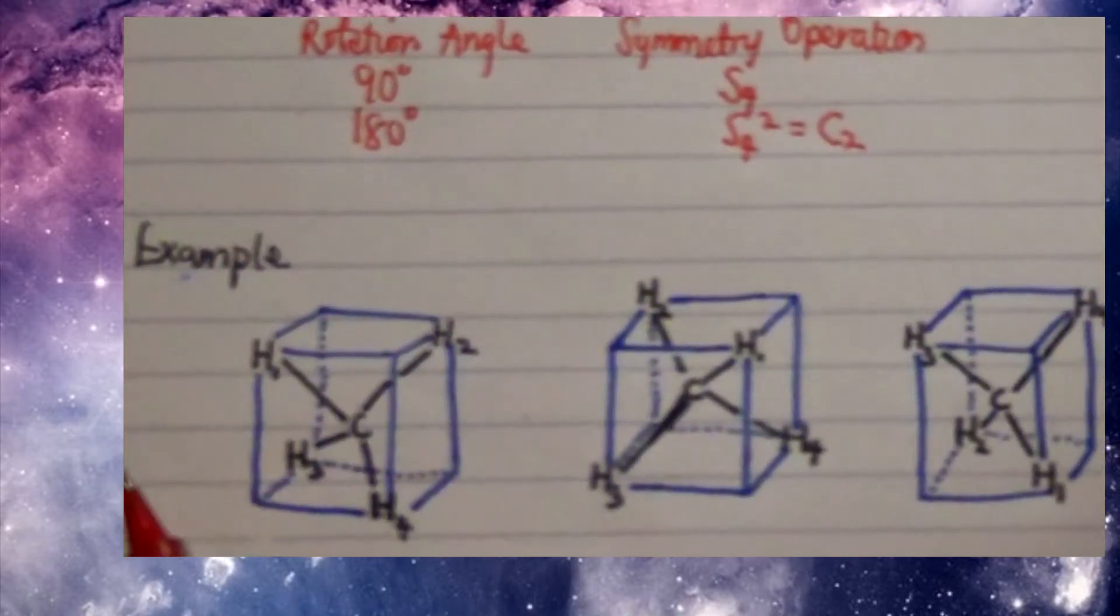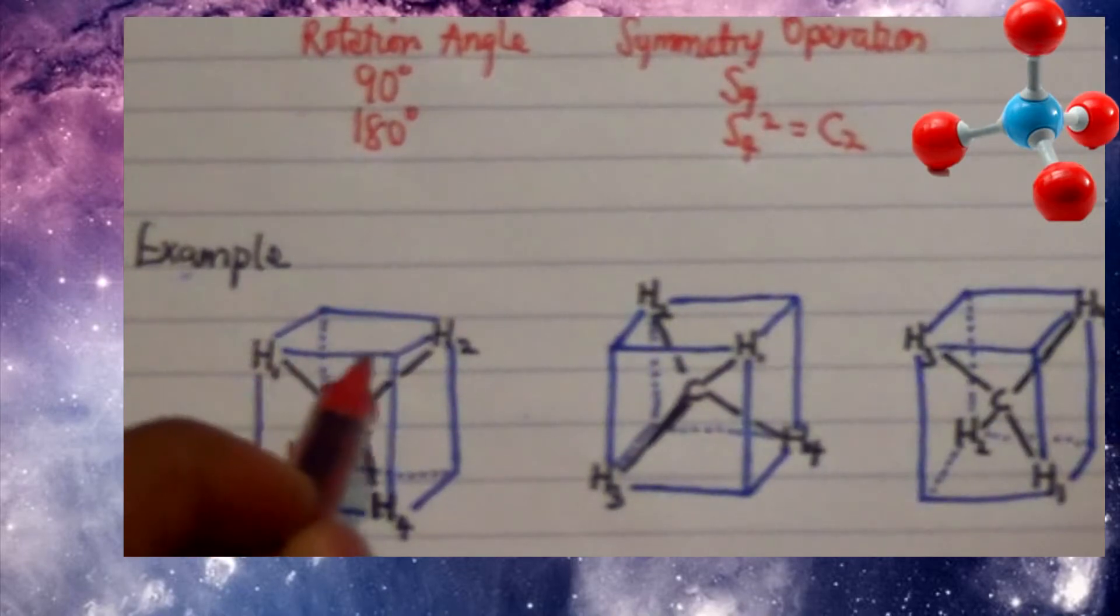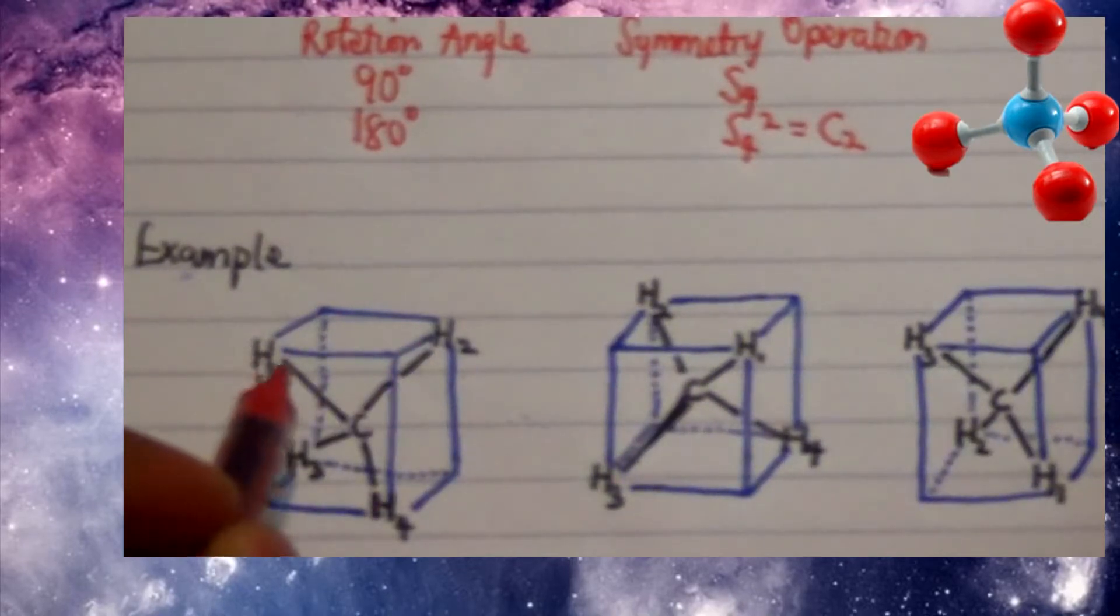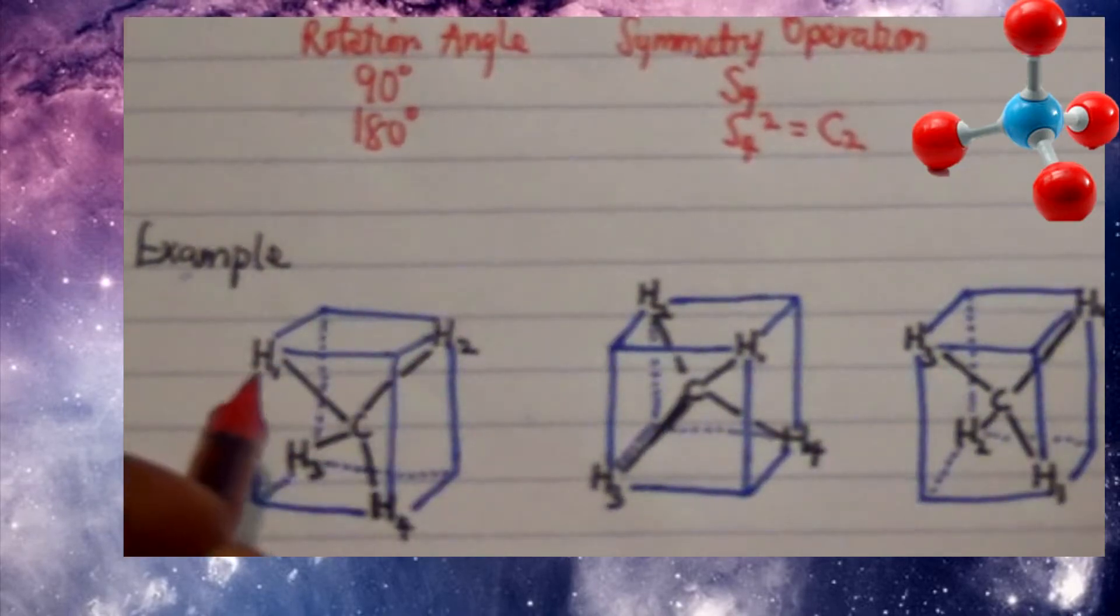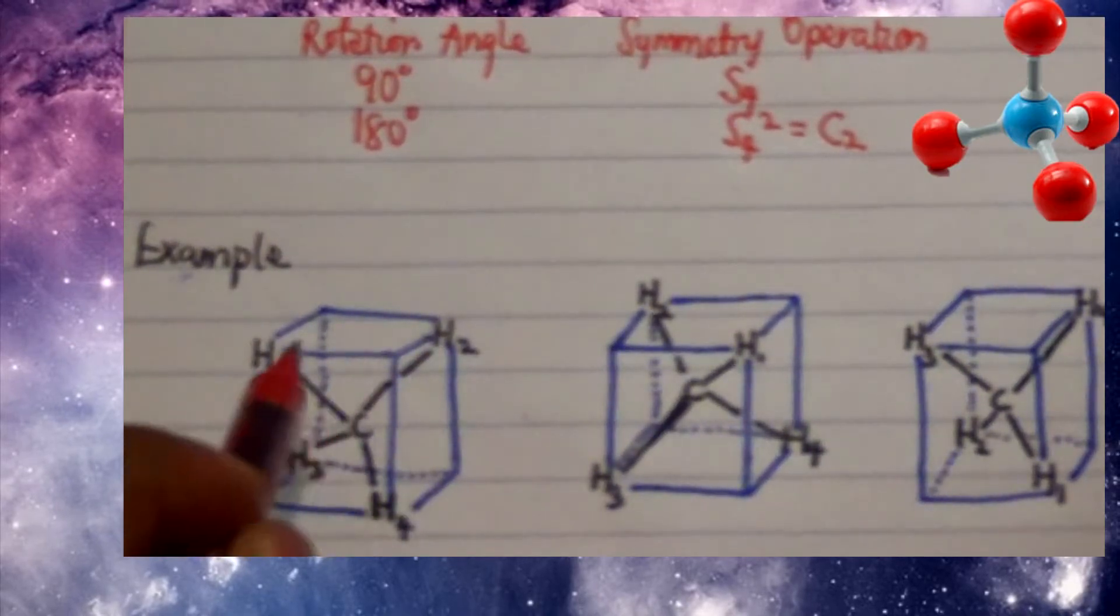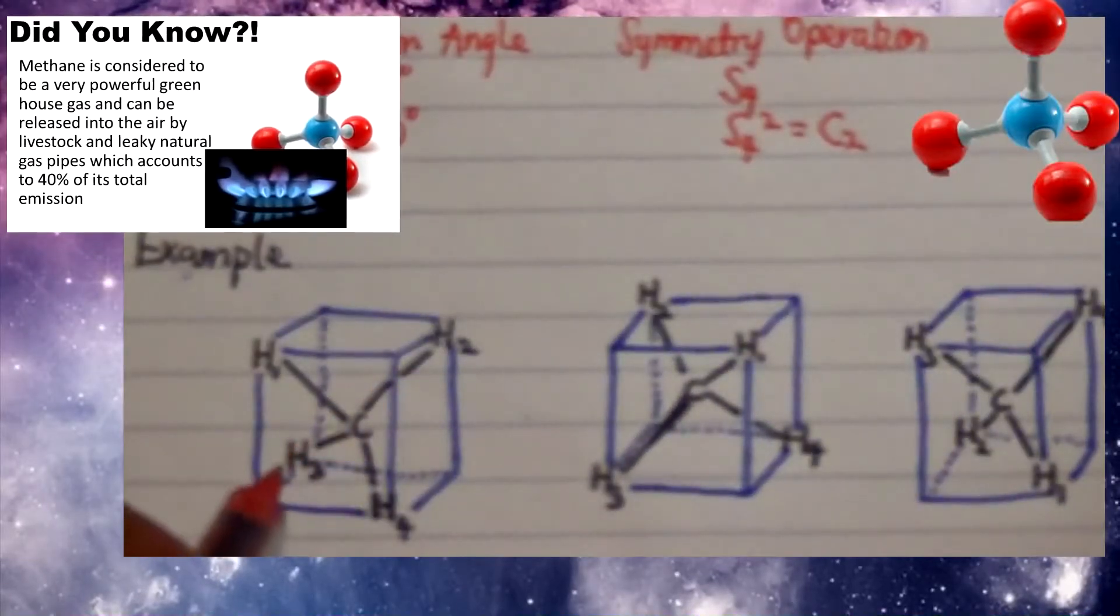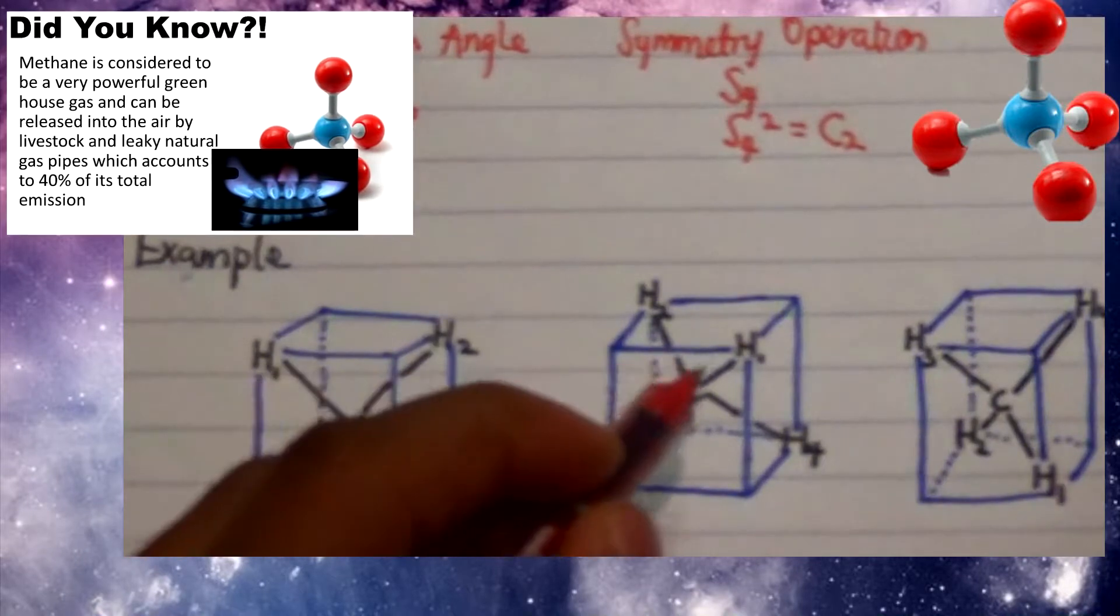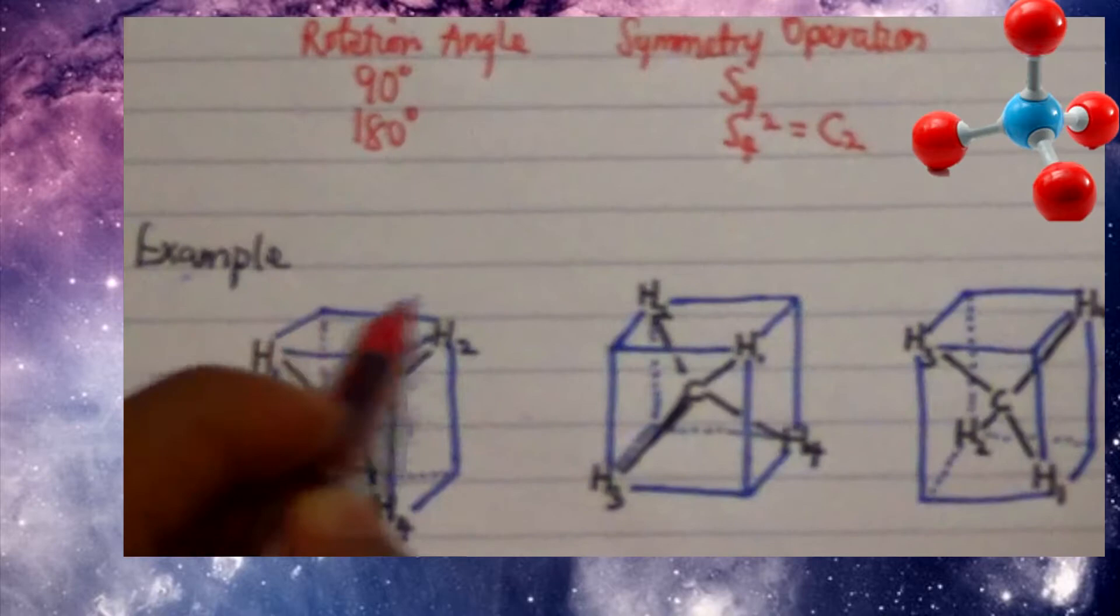Now this example shows us—first of all look at these molecules here that are tagged. I have the hydrogen atoms tagged here as 1, 2, 3, 4 in this particular box, and they are all at the edges of this cube. And then take note that this molecule is tetrahedral.